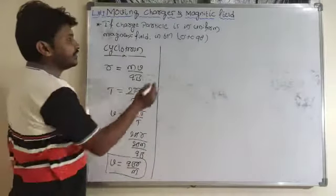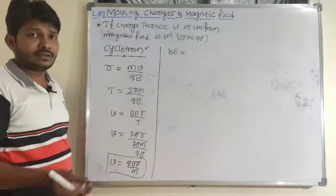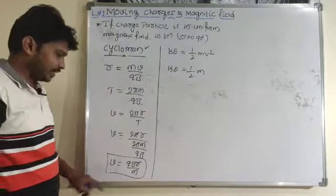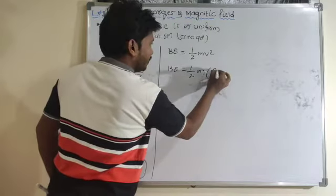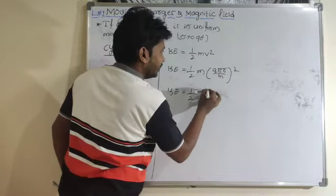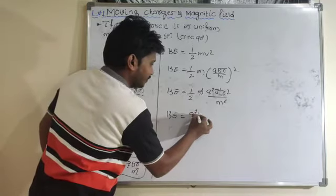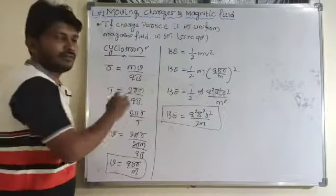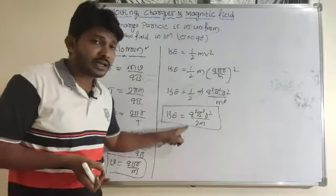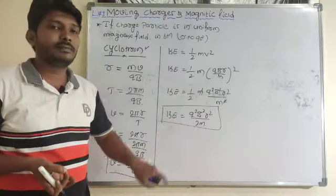Then what will be the kinetic energy of the charge particle? The kinetic energy is (1/2)mv² = (1/2)m(qBr/m)² = q²B²r²/2m. This is the required equation for kinetic energy of the charge particle when it is accelerated using a cyclotron: KE = q²B²r²/2m.